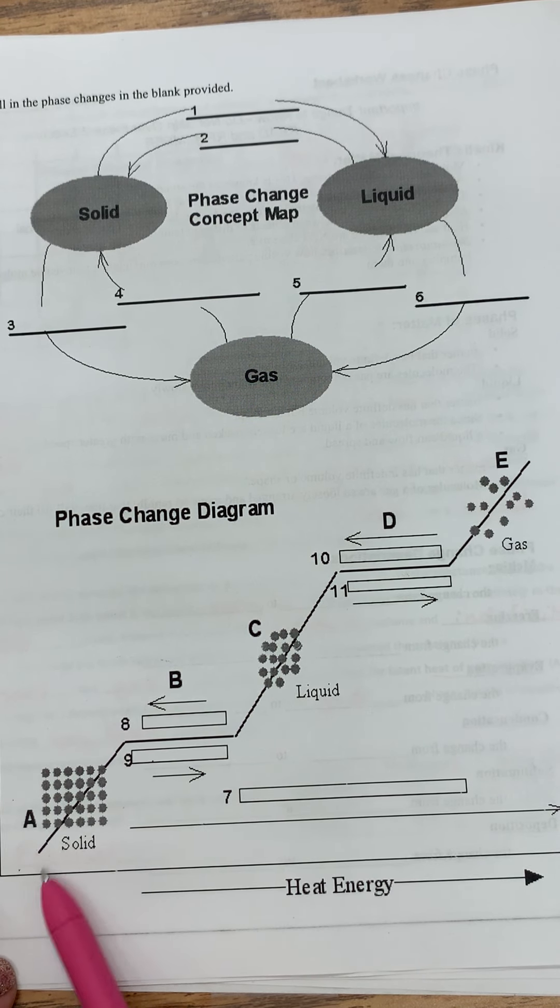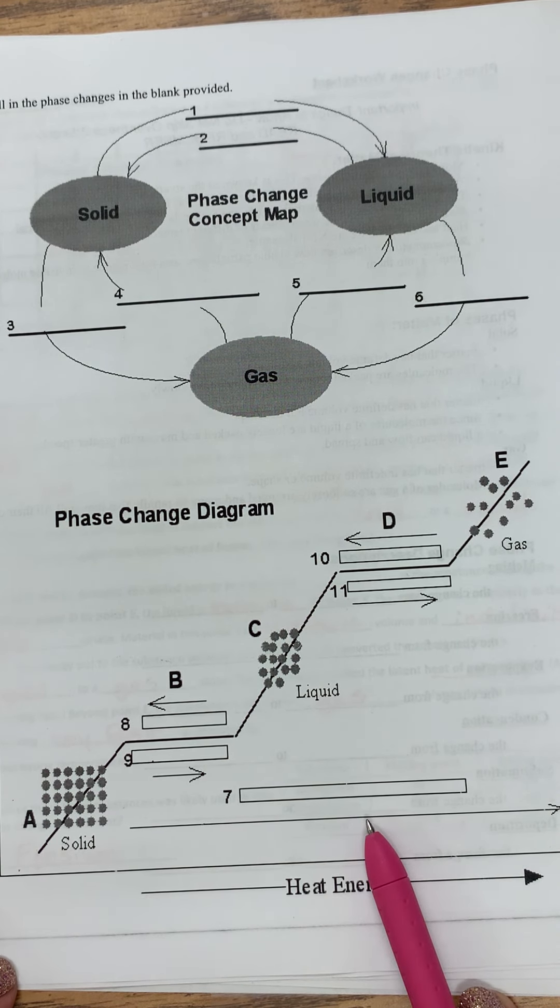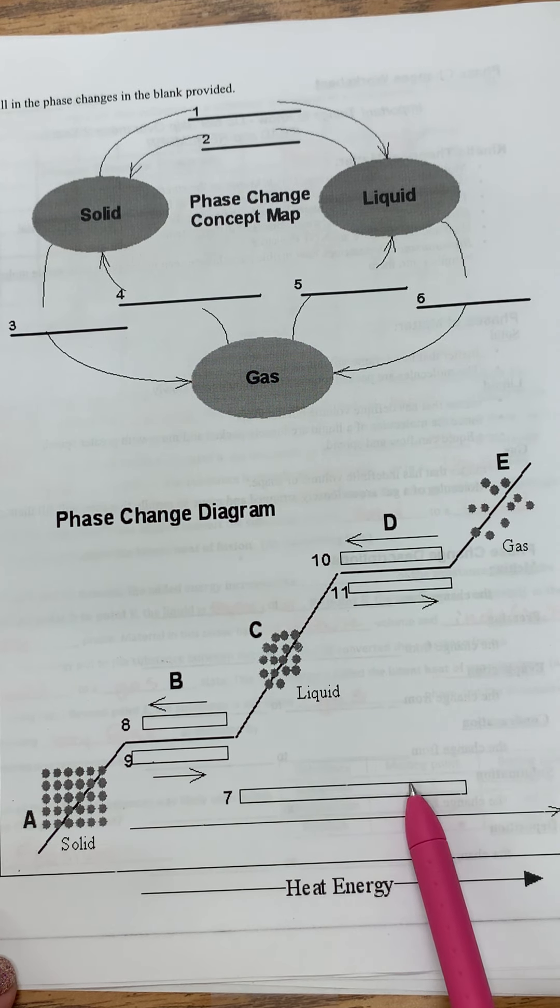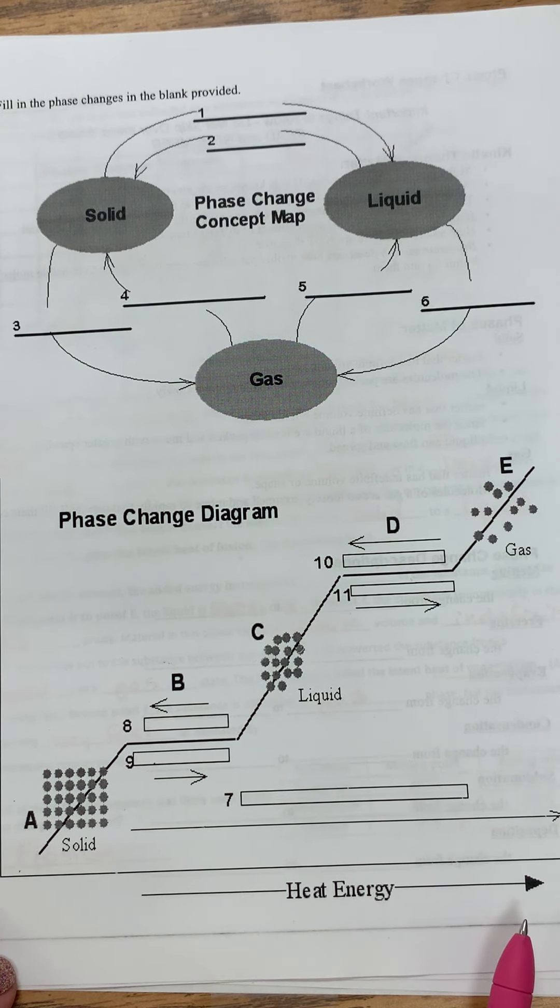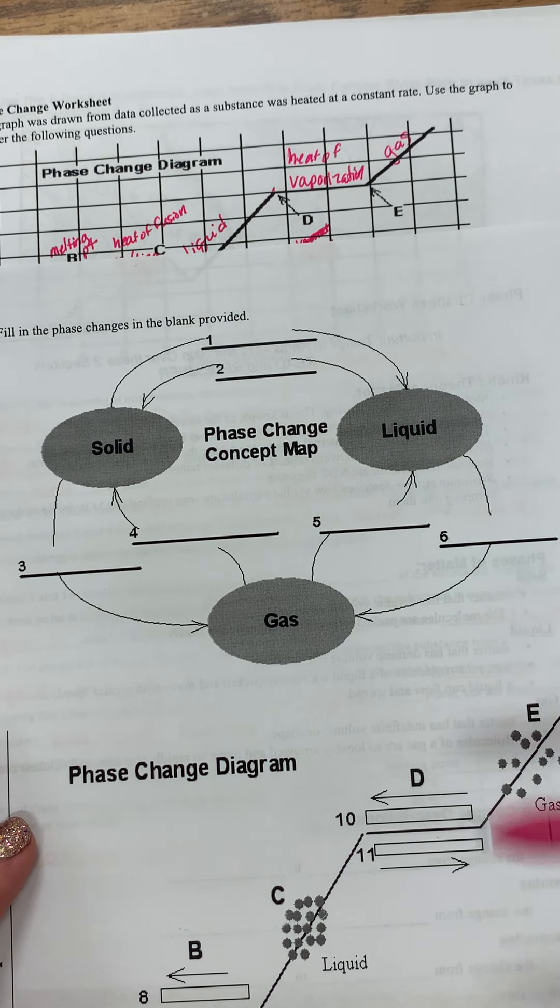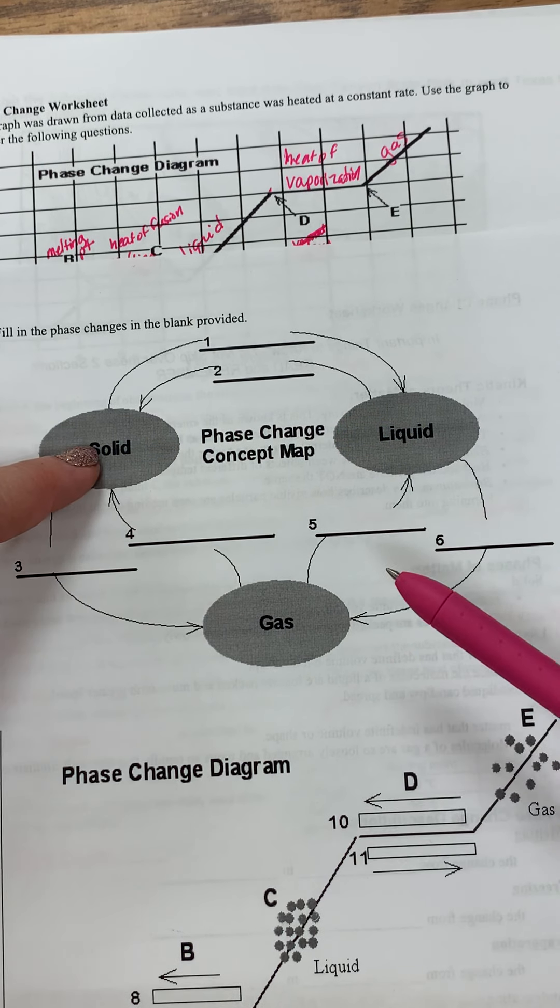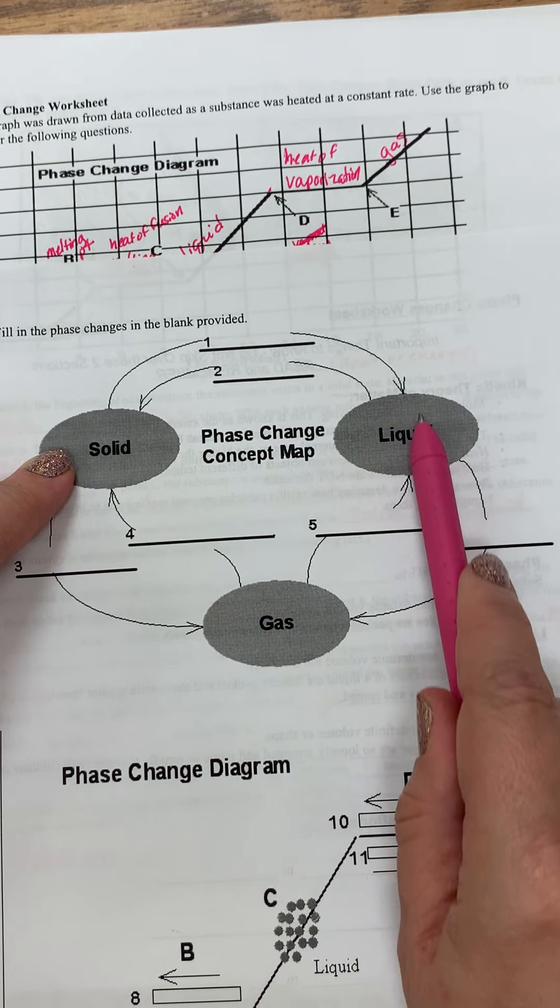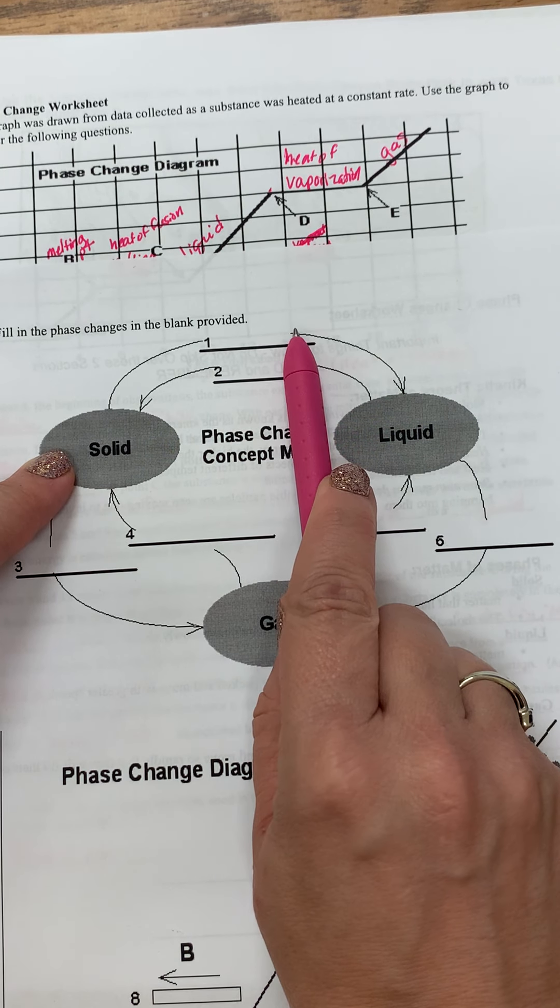And then the second page, there are two ways of looking at this graph. The bottom one is similar to what I just went over. And so you're going to fill in the labels for these spots that I have here. Up here, there are blanks and it's sort of the same way. So start for at a solid.